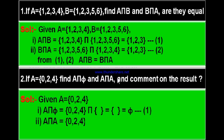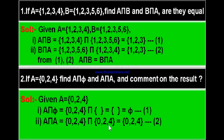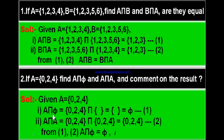The second part is A intersection A. A means {0, 2, 4} intersection again the same set A = {0, 2, 4}. The common elements are the same set {0, 2, 4}. Therefore A intersection A equals {0, 2, 4}. From results 1 and 2 you can understand that A intersection ∅ equals ∅, and A intersection A equals A.